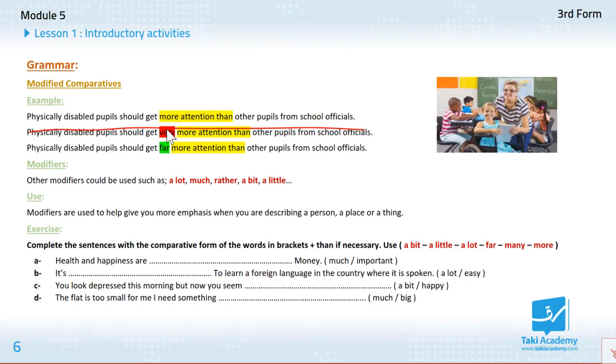So instead of very, we use the word far. And here it is correct. We use it to modify the degree of the comparative.